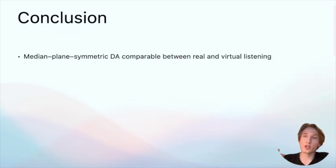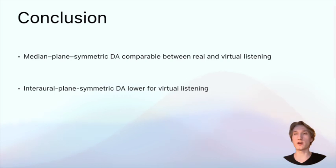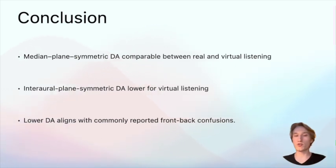So to conclude, we found that the decoding accuracy for median plane symmetric locations is comparable between real and virtual contexts. But decoding accuracy for virtual sources symmetrical around the interaural plane was significantly lower than for real sources. And this aligns with common perceptual reports of confusions between front and back locations. And our behavioral data further supports this.